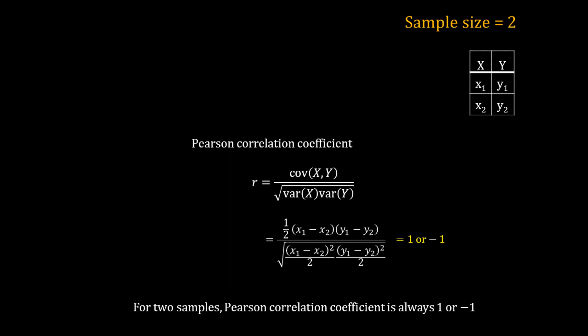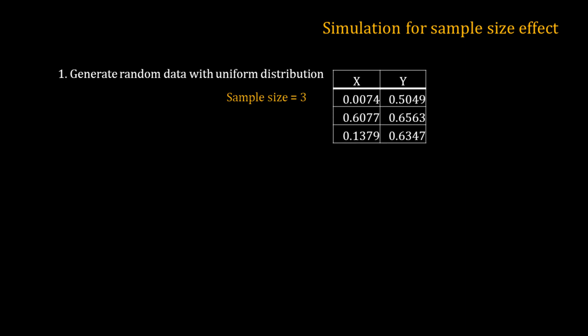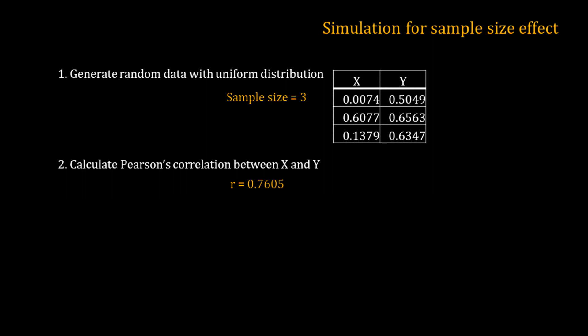To answer that question I did a simple computer simulation. The first step is to generate random values of x and y from a uniform distribution. For example, with a sample size of 3 I got some random data. Now I calculate the Pearson correlation coefficient for this data. Note that this is just a random data set from a uniform distribution, so each number is an independent random number. Ideally the Pearson correlation coefficient should be 0. Here the calculated coefficient is 0.7605 — quite a high correlation.